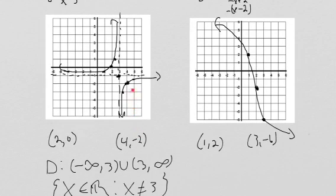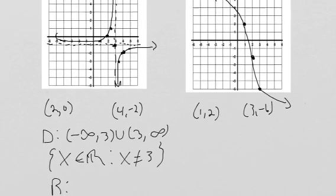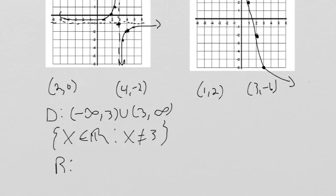So, we can either say that the range is negative infinity to -1, union -1 to infinity, or we can say y, in this case, is a real number, as long as y is not -1.